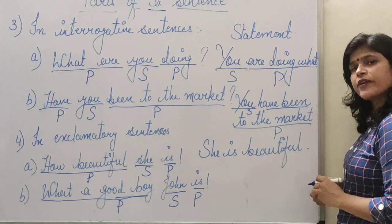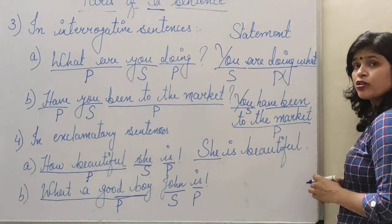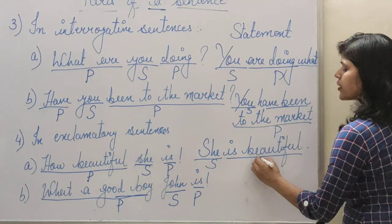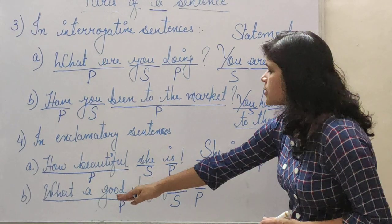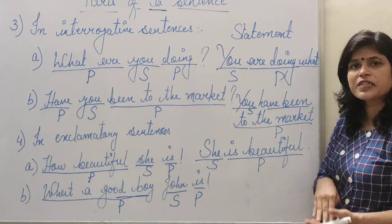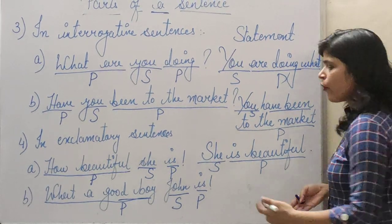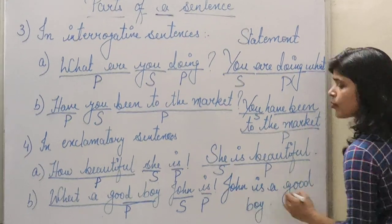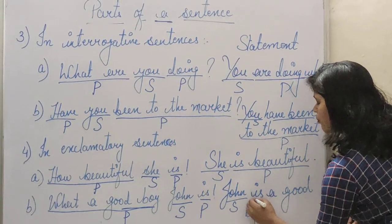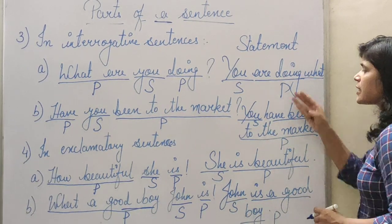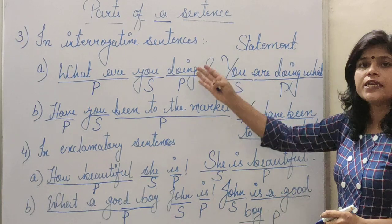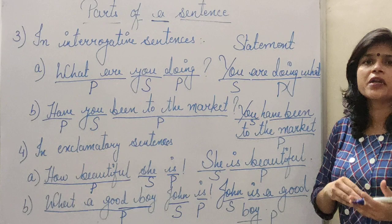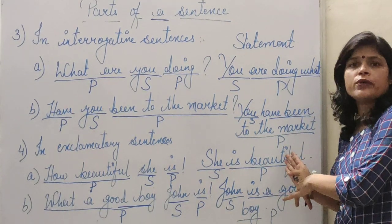For exclamatory sentences: 'How beautiful she is?' becomes 'She is beautiful.' So 'she' is the subject — and she is also a pronoun — and 'is beautiful' is the predicate. Second: 'What a good boy John is' becomes 'John is a good boy.' So this is an easy way to find subject and predicate in interrogative and exclamatory sentences. If you are unable to find them, just change the sentence into a simple statement and you can easily find out which is subject and which is predicate.